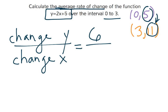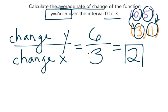And then look at our x values. It went from 0 to 3, so it went up 3 spots. So the change in x is 3. 6 divided by 3 is our average rate of change. 6 divided by 3 is 2. So the average rate of change over that interval is 2.